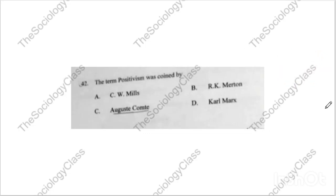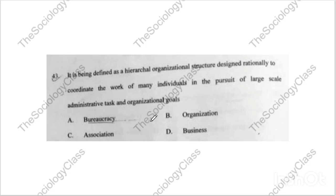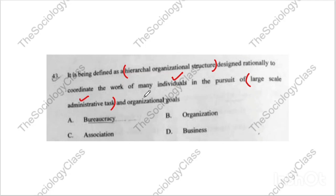Question number forty-two: 'The term positivism was coined by...' C.W. Mills, R.K. Merton, Auguste Comte, or Karl Marx? The correct answer is C — Auguste Comte. Question number forty-three: 'It is being defined as a hierarchical organizational structure designed rationally to coordinate the work of many individuals in pursuit of large-scale administrative organizational goals.' Options: bureaucracy, organization, association, business. The correct answer is A — bureaucracy. Please remember its features.